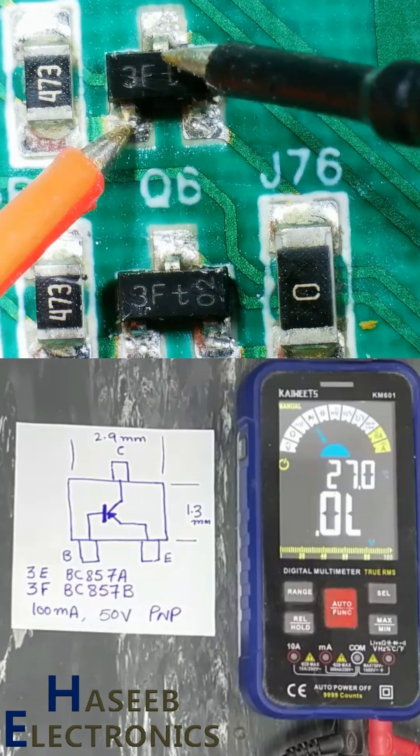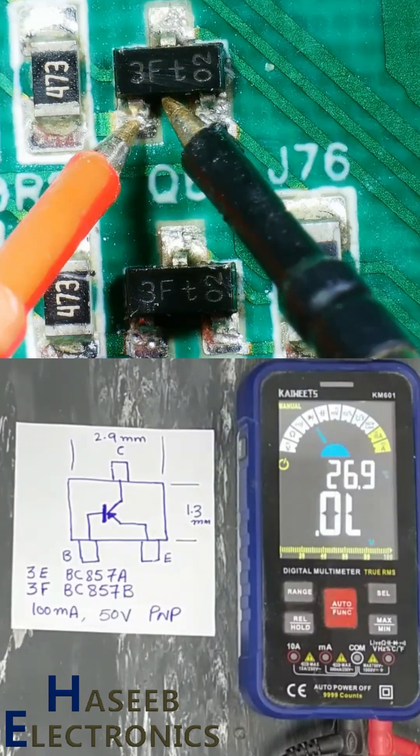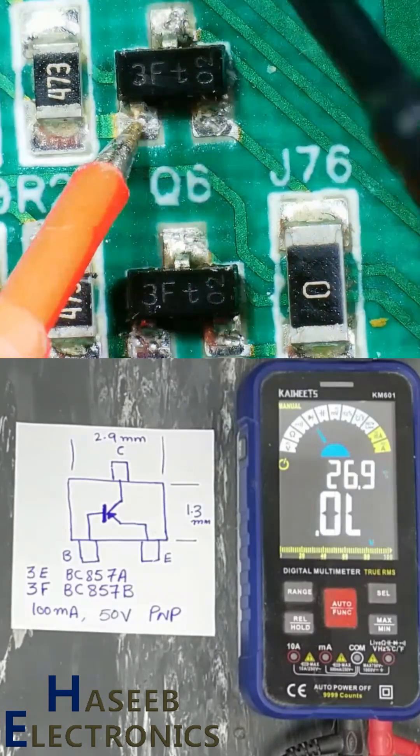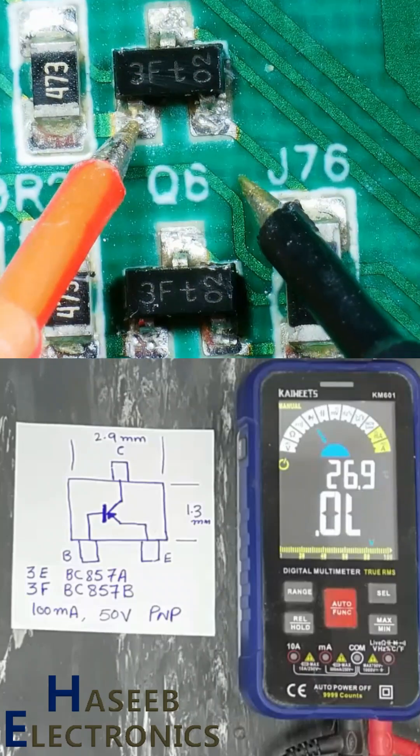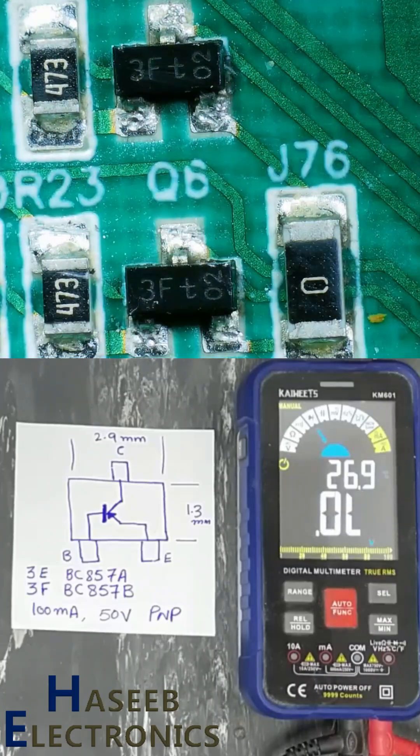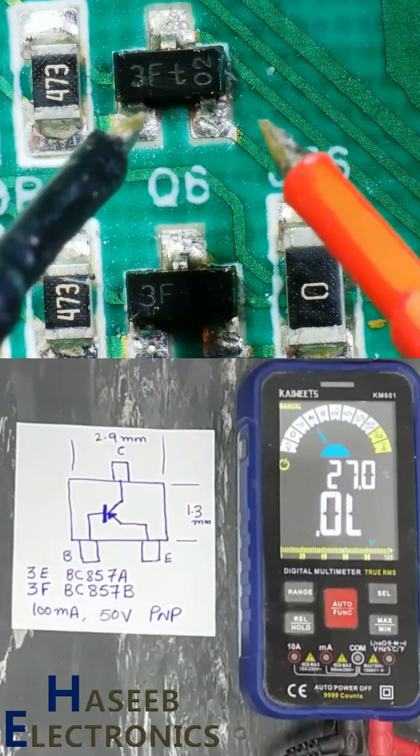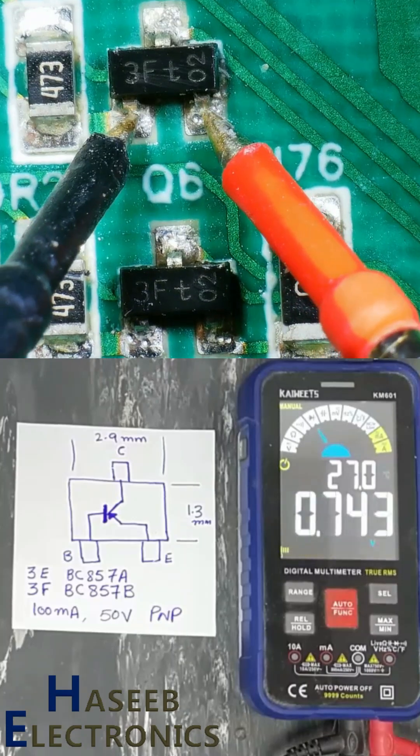Sometimes we will find high reading that will be due to parallel components connected between base to collector or base to emitter. But in this condition, there is no other component, it is just a switch.